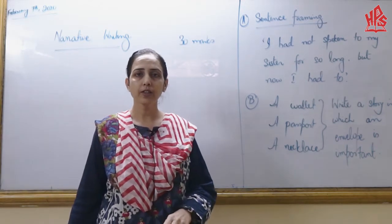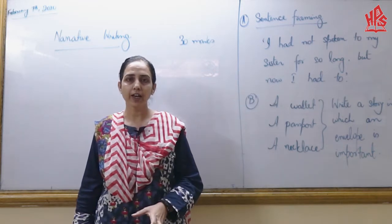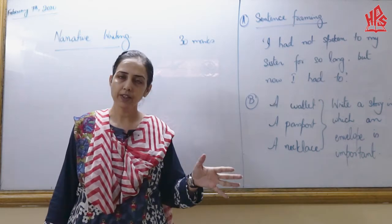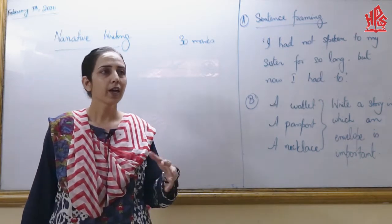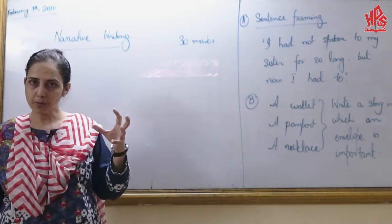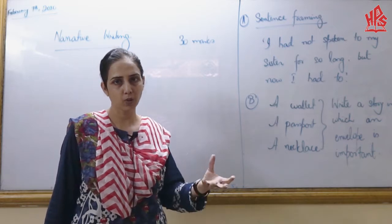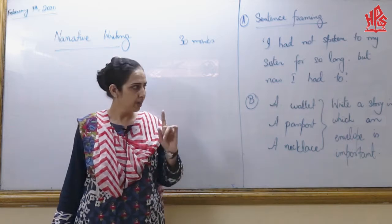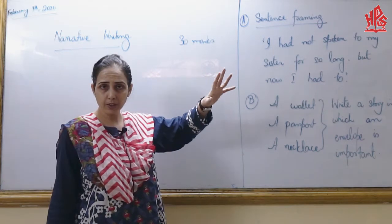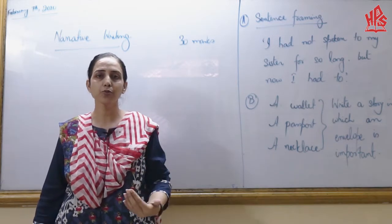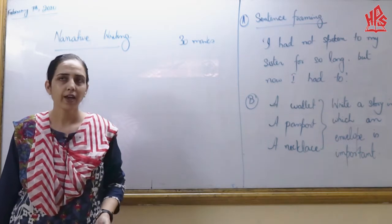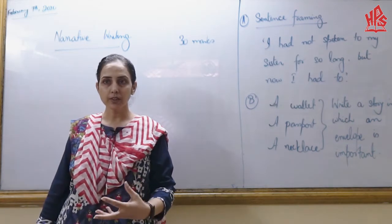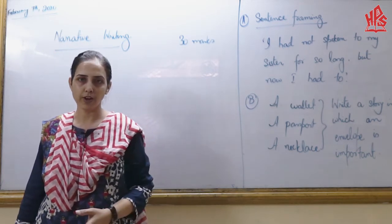If you are talking about your CI paper, we usually have in a 30-mark question two types of questions. Number one is sentence framing, which we have been discussing in class. The other involves writing around one particular kind of object — an envelope, a wallet, anything like that — which requires narrative writing. This is actually the most popular question in CI, and the majority of students take it as their most tempting question, believing they will be able to write on it.